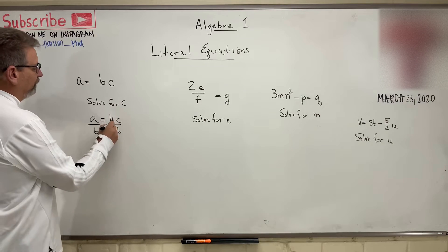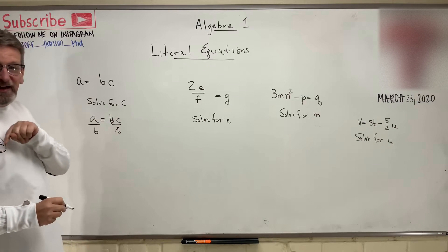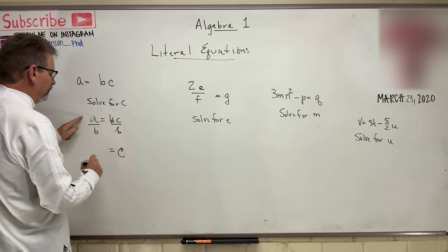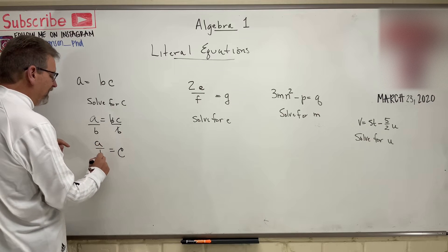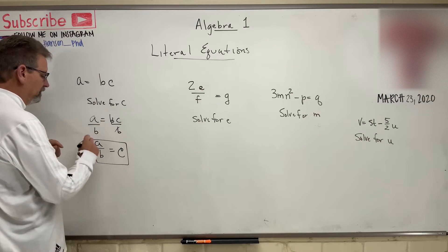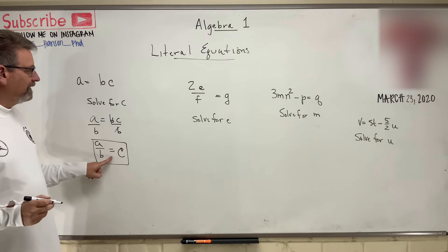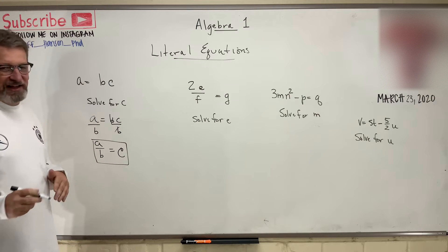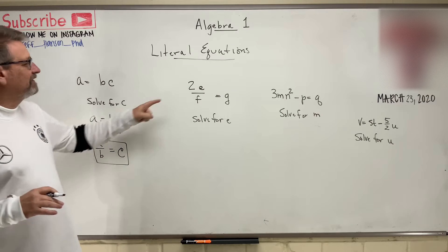Then, the B's will cancel out, leaving me with C all by himself. So, C is equal to A over B. That's it. That's all there is to this, okay? Don't be intimidated just because it's full of a bunch of letters. That's okay.